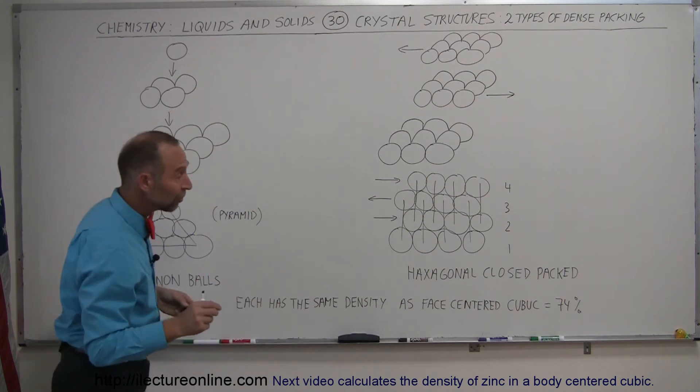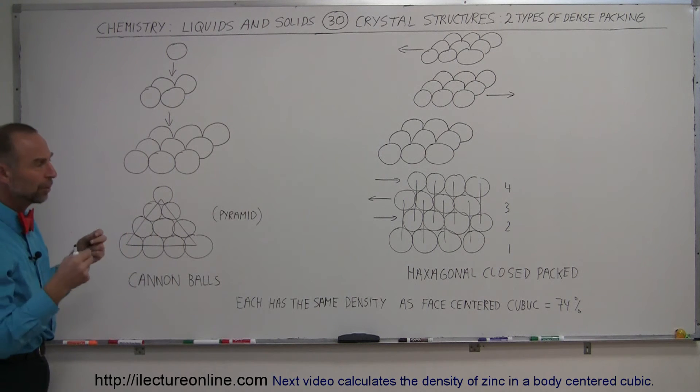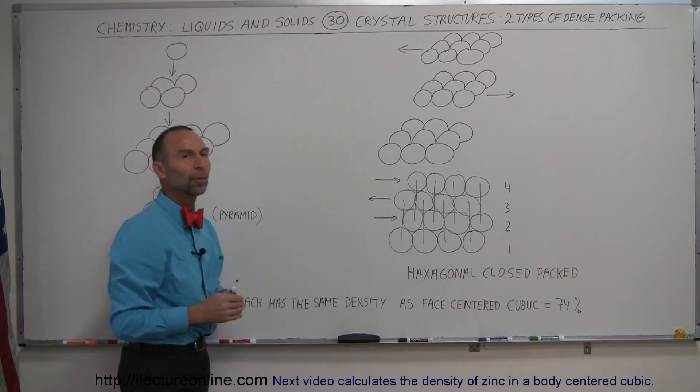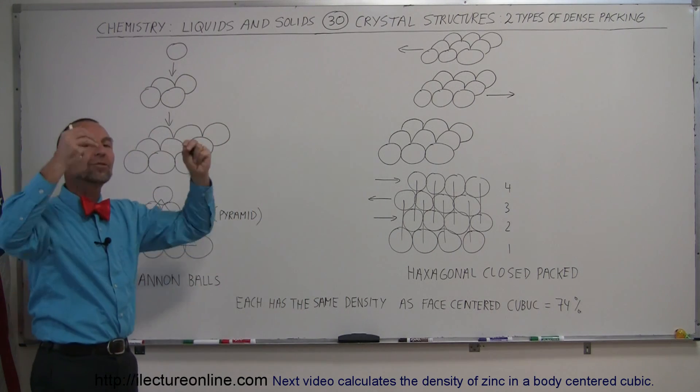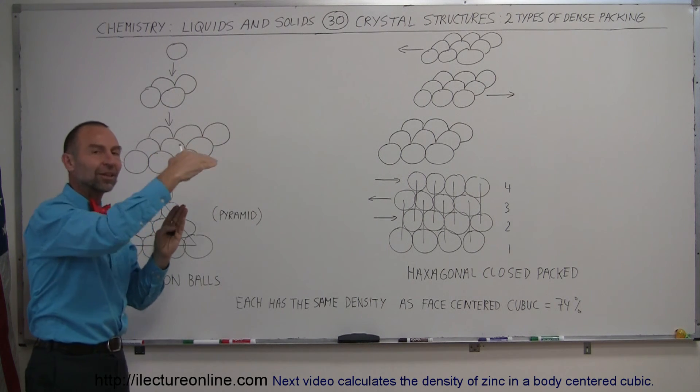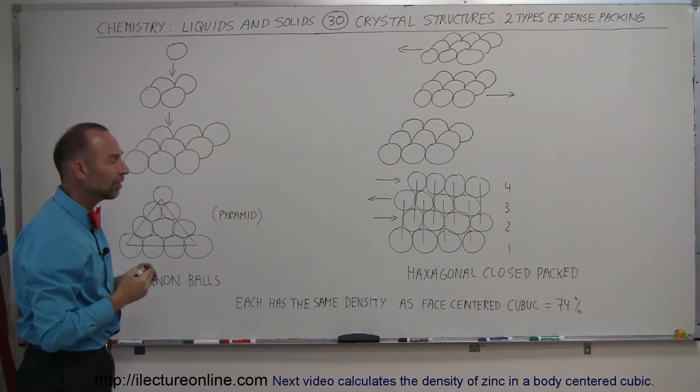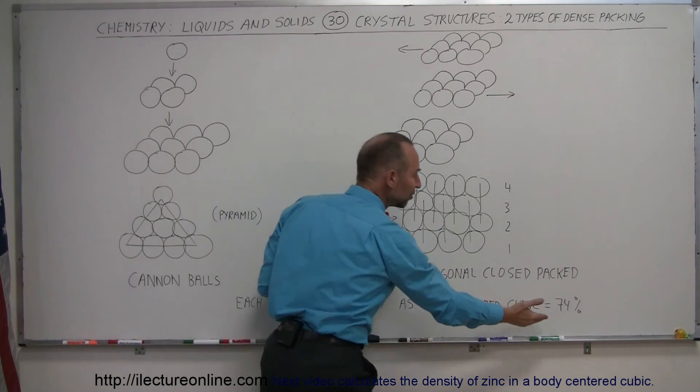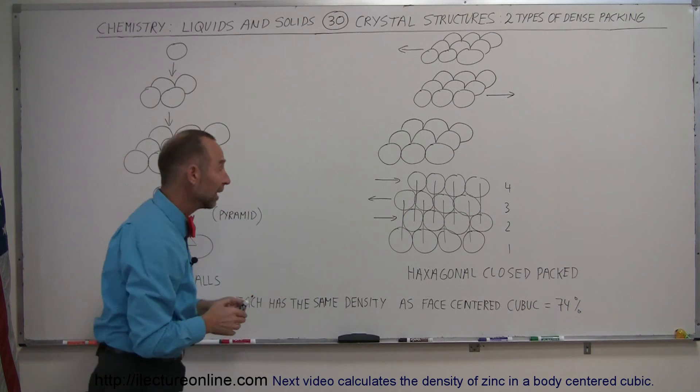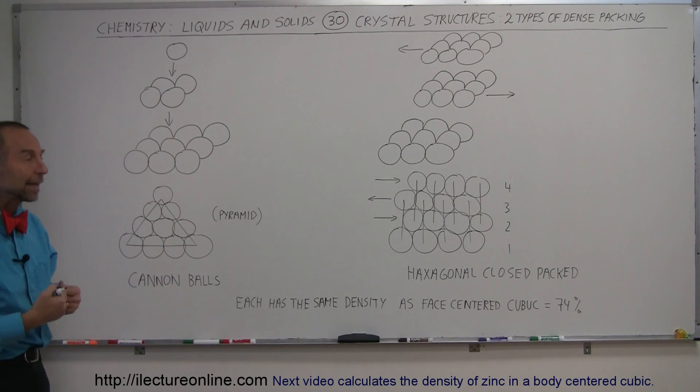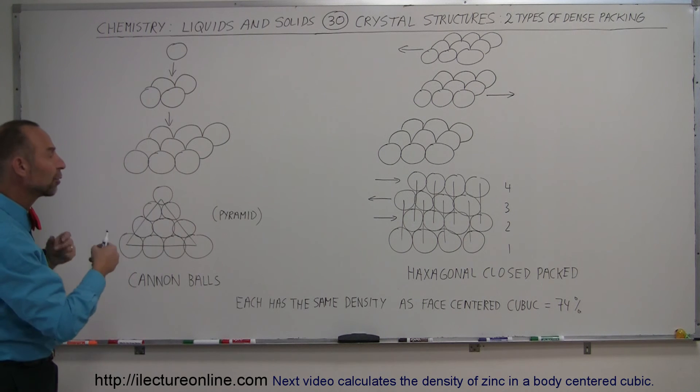Now, what is interesting is because we calculated in a previous video the density of the atoms in what we call the face-centered cubic arrangement, where we have atoms at each of the eight corners of the cube, and then we have one more atom at the center of the face of each of the six faces of the cube. And when we calculated the density of the packing, it was 74%. It turns out these two particular arrangements will also give you a dense packing of about 74%, so it's all about the same.